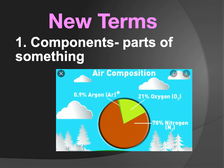Now let's learn some of the new terms from this chapter. Components means parts of something. For example, air is a mixture of different gases, so these are the components of air: oxygen, nitrogen, argon, helium — these are all the components of air.